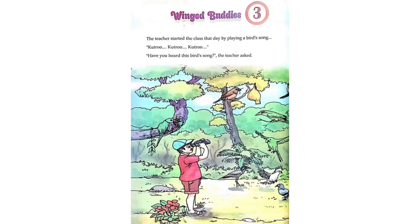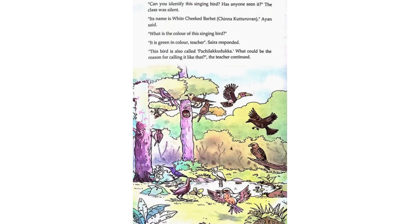Lesson 3: Winged Buddies. The teacher started the class that day by playing a bird's song — 'Kutru, Kutru, Kutru.' Have you heard this bird's song? The teacher asked. Can you identify the singing bird? Has anyone seen it? The class was silent. Its name is White-Cheeked Barbet, Ayan said.